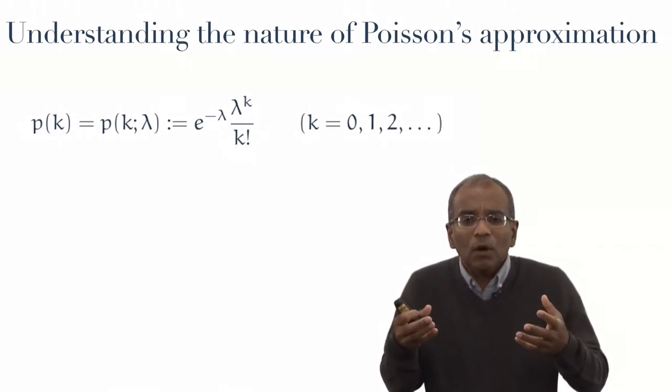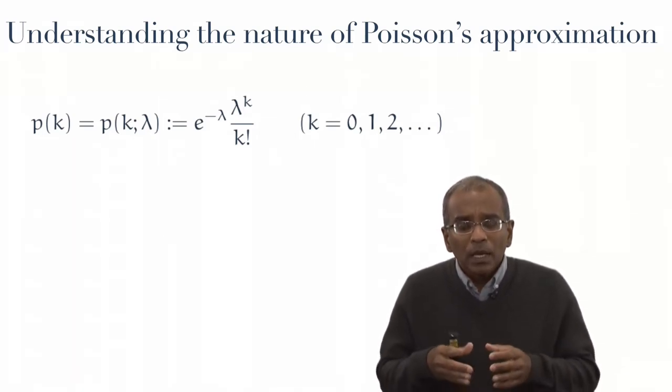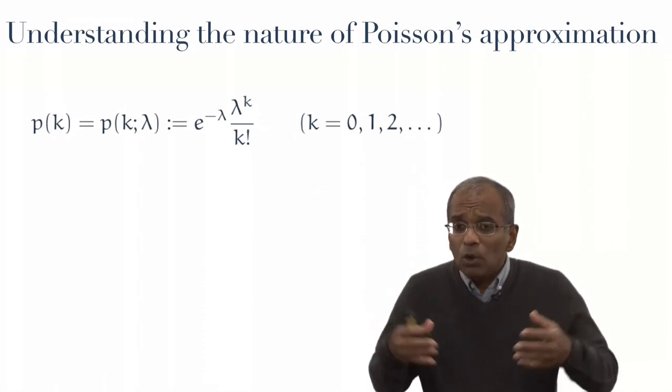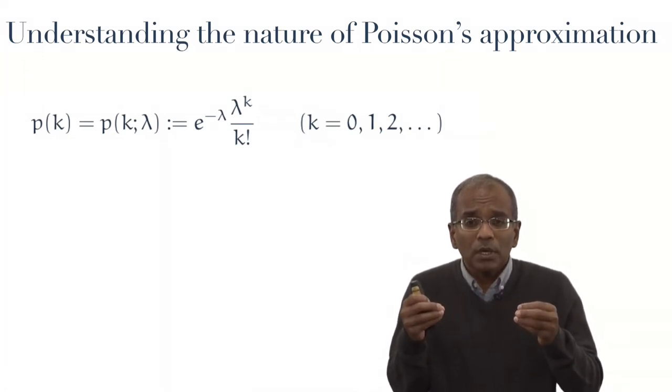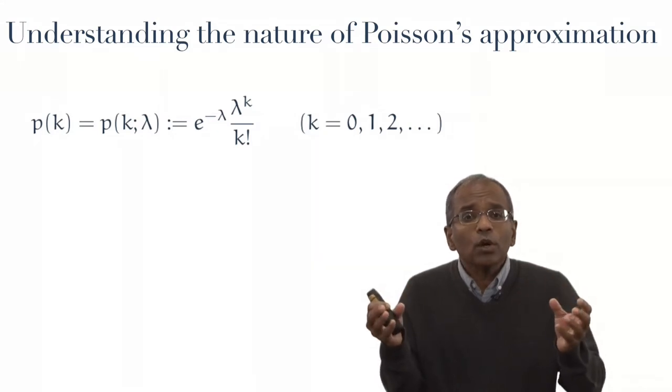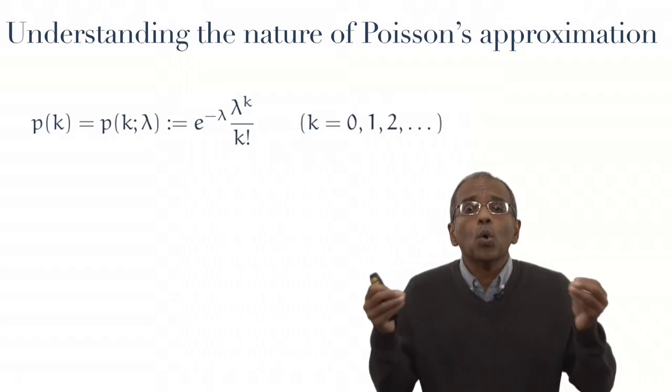Think, for example, of the distribution of bombs landing on London. And it became clear over a fairly long period of time that the Poisson approximation was going to take on a life of its own, was going to become an important distribution in its own right.